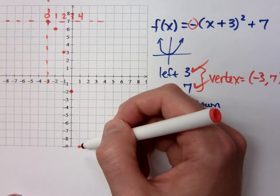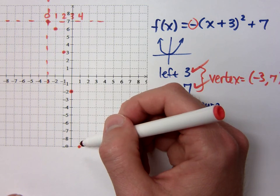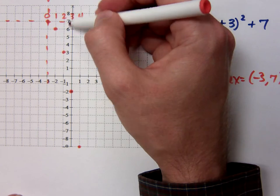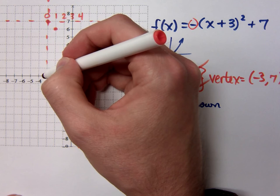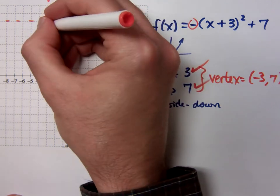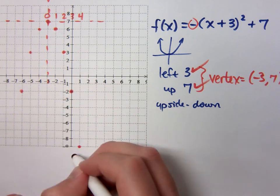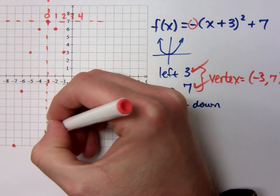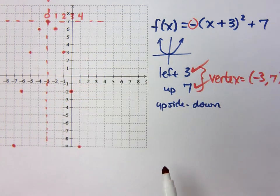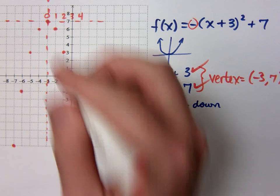Do you have any kind of symmetry here to help you get other points? The y-axis of symmetry? Well, it has symmetry about the y-axis, but since this is now your new y-axis, this axis of symmetry is right here. So copy these points over, making sure that they are equidistant from this vertical line.